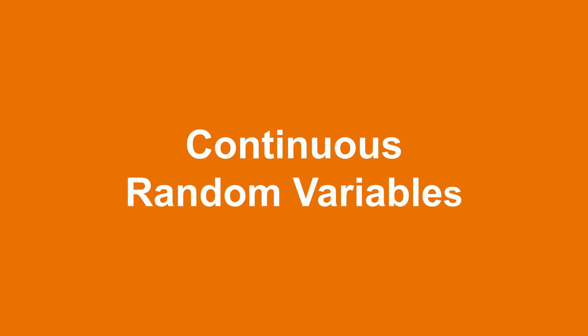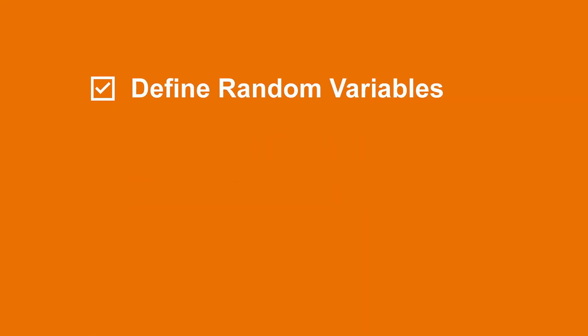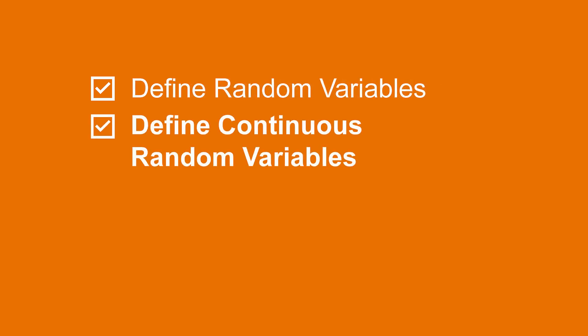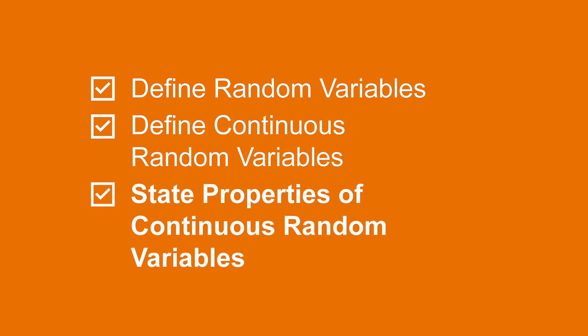Today's topic is continuous random variables. We will start this video by discussing random variables in general and how they are used to talk about probabilistic events. We will then specify what it means to be a continuous random variable. Finally, we will discuss the properties of continuous random variables and how to evaluate events which are modeled as continuous random variables.